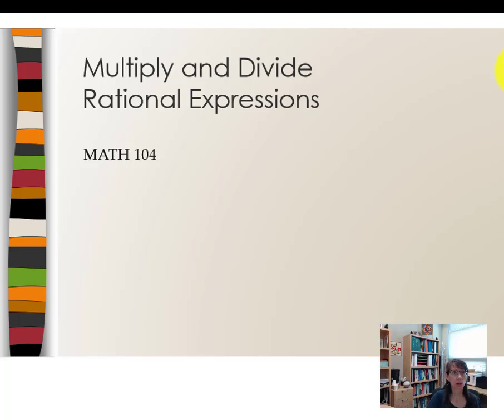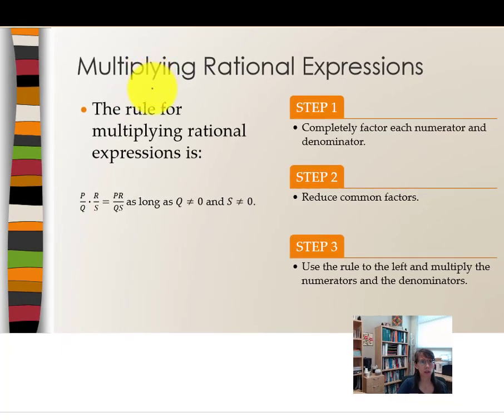In this video we're going to talk about how to multiply and divide rational expressions. To multiply rational expressions, the rule is to take the numerators and multiply those together, and take the terms in the denominator and find that product. But keep in mind that any term in the denominator cannot equal zero. So in this case, q cannot equal zero and s cannot equal zero. If either one is equal to zero or both, then we have an undefined product.